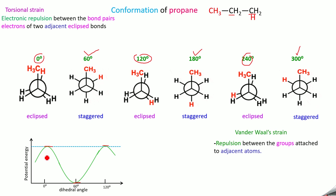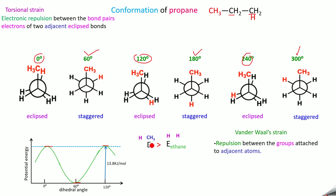When you have high potential energy, the molecule is unstable — so the eclipsed form is unstable. The staggered form, where the potential energy is minimum, is the stable form. The conformational energy of propane is 13.8 kilojoules per mole, which is greater than the conformational energy of ethane. This is because in propane, we have hydrogen and CH3 repelling each other, whereas in ethane we have hydrogen-hydrogen repulsion. CH3 is a bulky group compared to hydrogen, so the strain is more in propane, giving it a greater conformational energy — a difference of 1.2 kilojoules per mole.